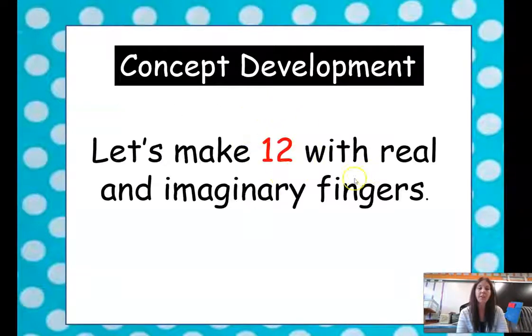We're going to make 12 with real and imaginary fingers. Get your fingers ready and we're going to count our fingers: 1, 2, 3, 4, 5, 6, 7, 8, 9, 10. Together we have 10 — this is a group of 10 right here, 10 fingers. So if we want to make 12, we have 10, and then how many more? 11, 12 — we have 2 more. So 2 imaginary fingers. We have a group of 10 and 2 more.